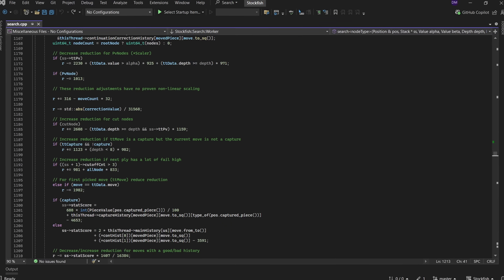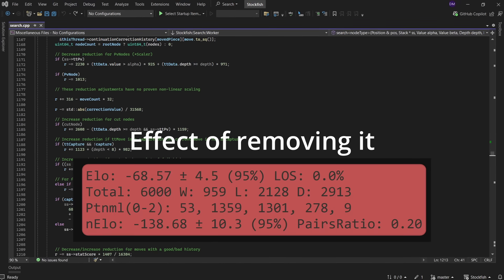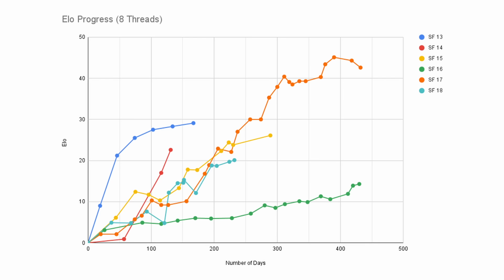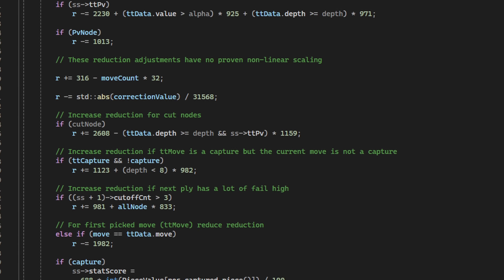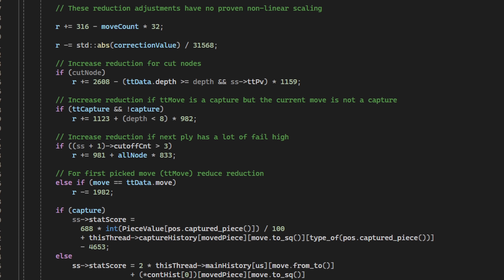This code may not look like much, but its impact on performance is equal to nearly a year of development progress. In addition to the baseline reduction, we've added a bunch of extra conditions over the years based on other stuff we know about the position.